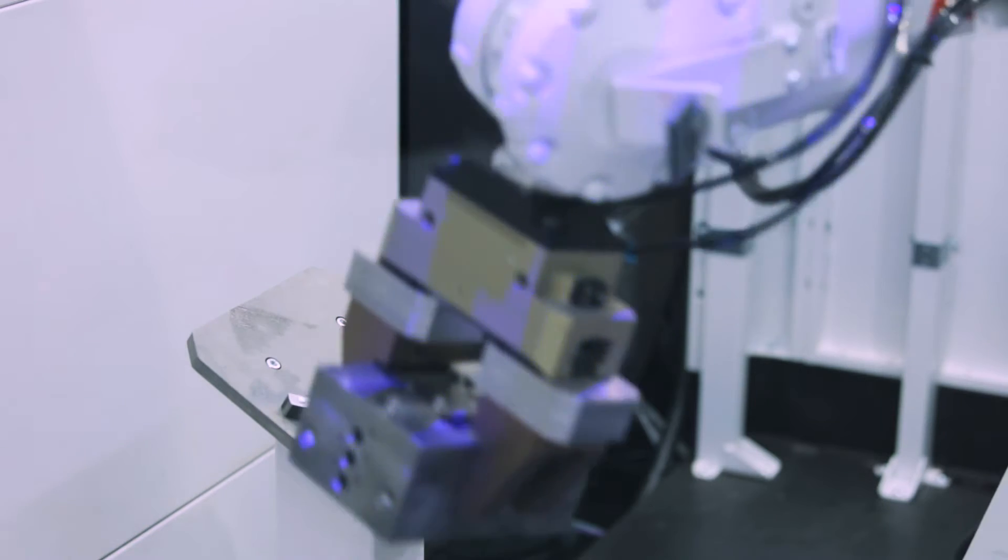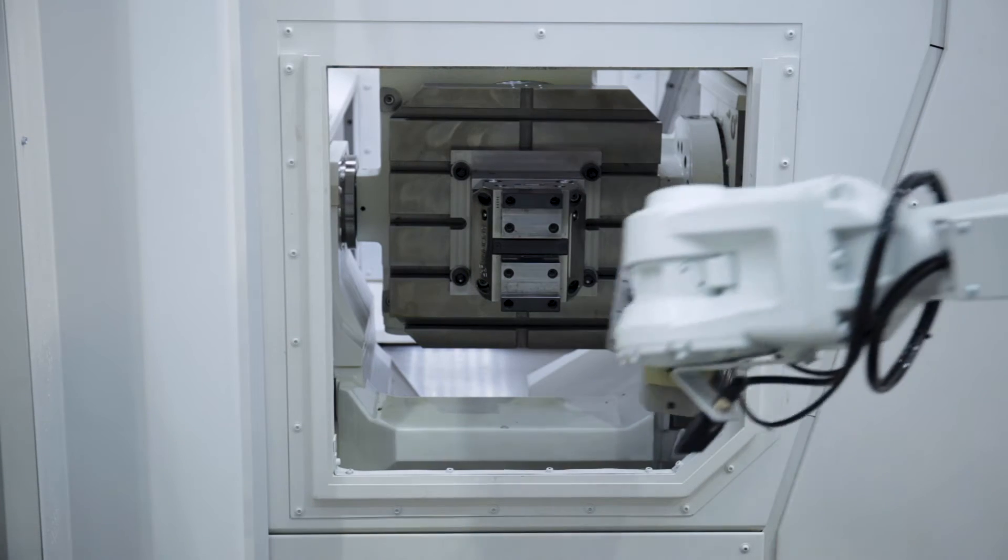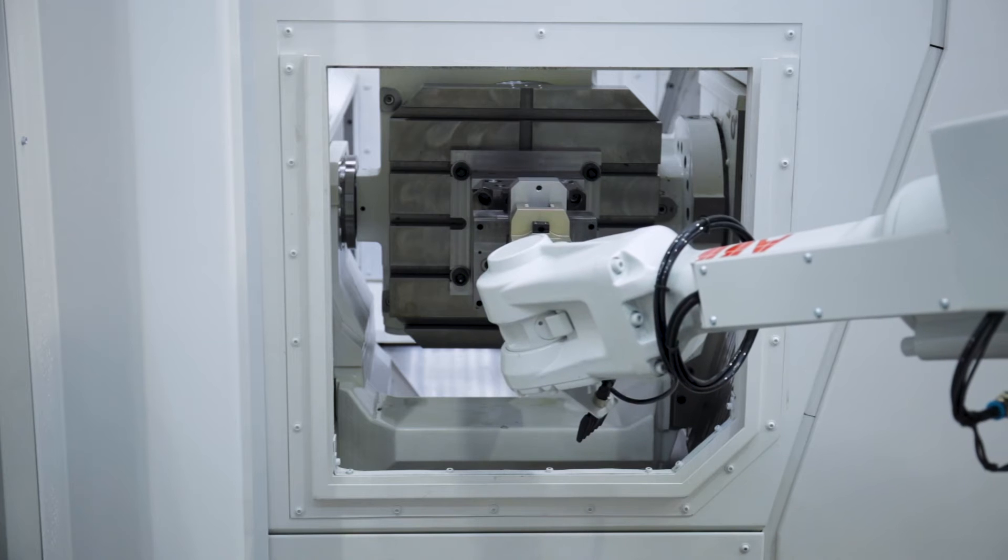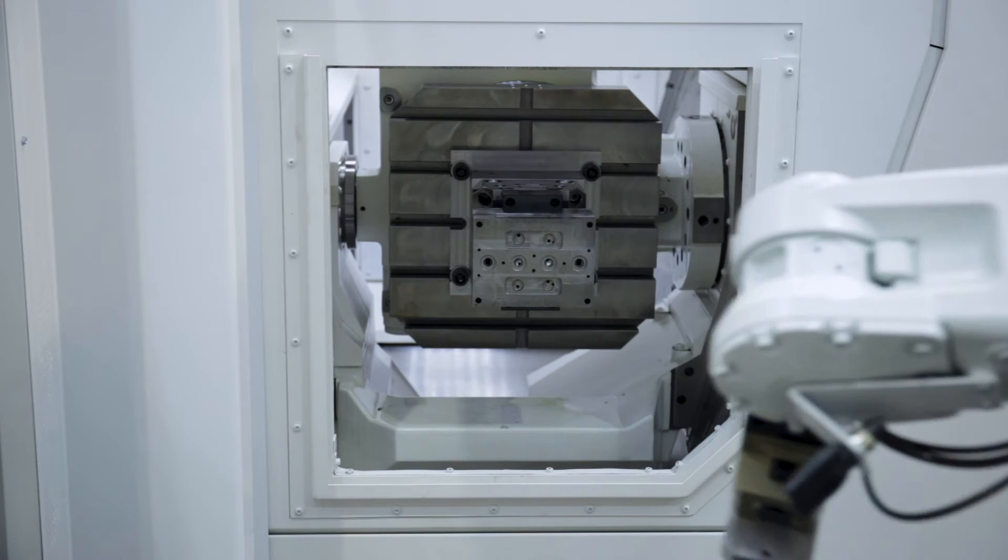They're self-loading, that means they're picking up the part from a belt or from some preparation station. So this kind of automation could also be done on this machine. You just have a stocker and a station where you separate the parts, one from each other.